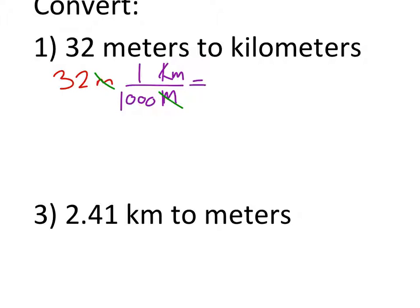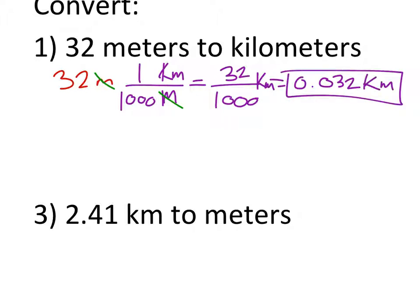So what we end up with is 32 divided by one thousand in kilometers, which is really just thirty-two thousandths. So as a decimal, we get 0.032 kilometers. That would be it for that one. But let's look at this in a different way.